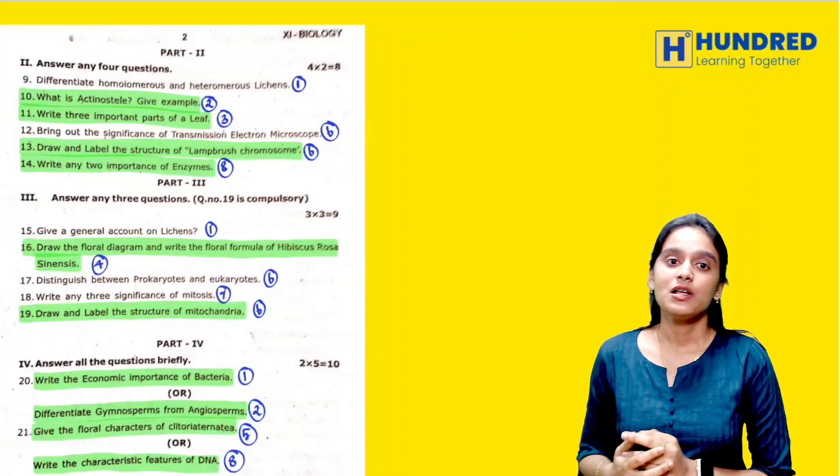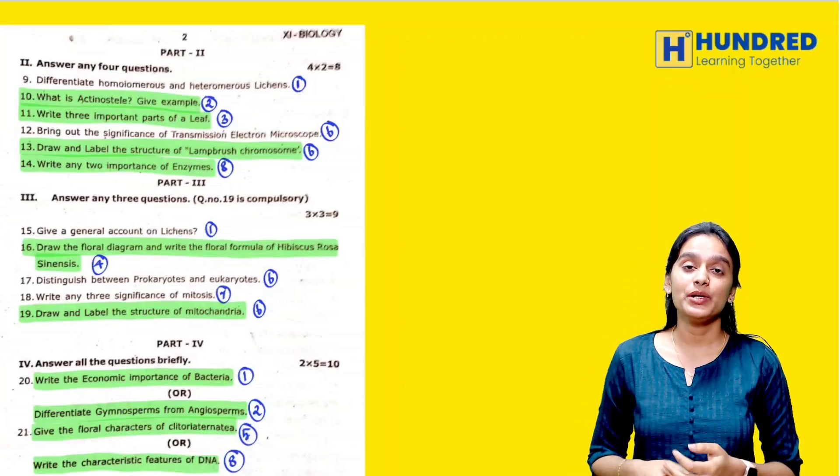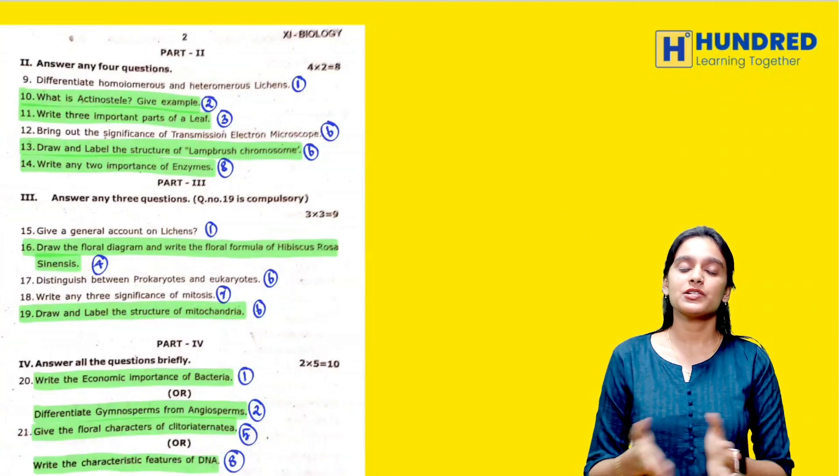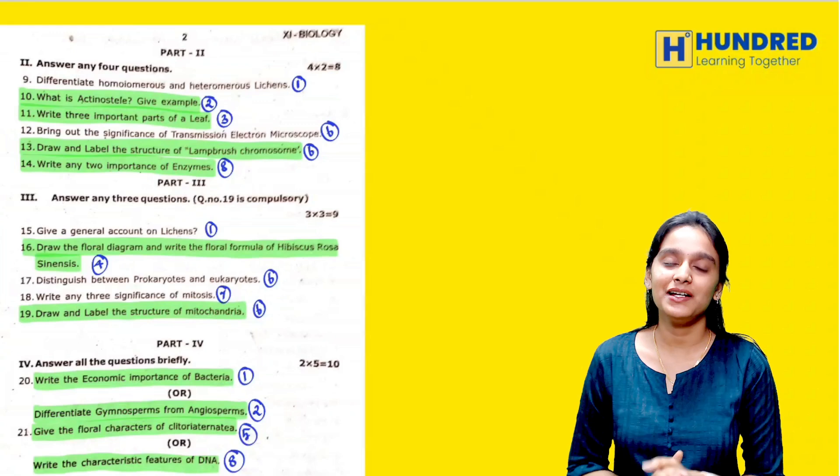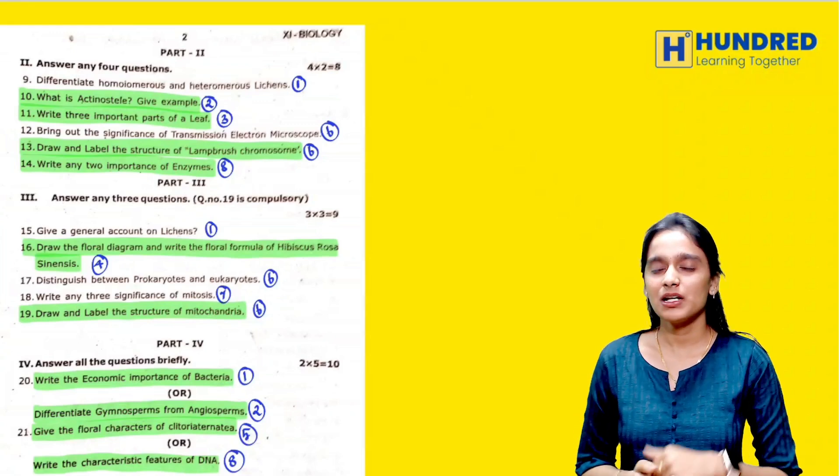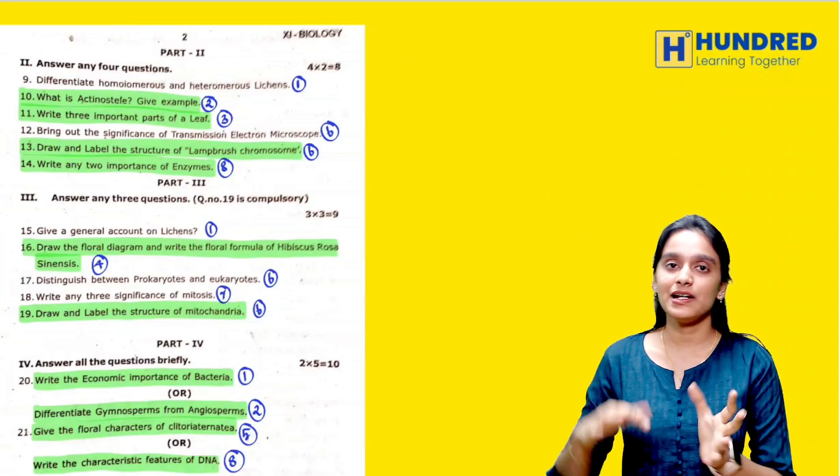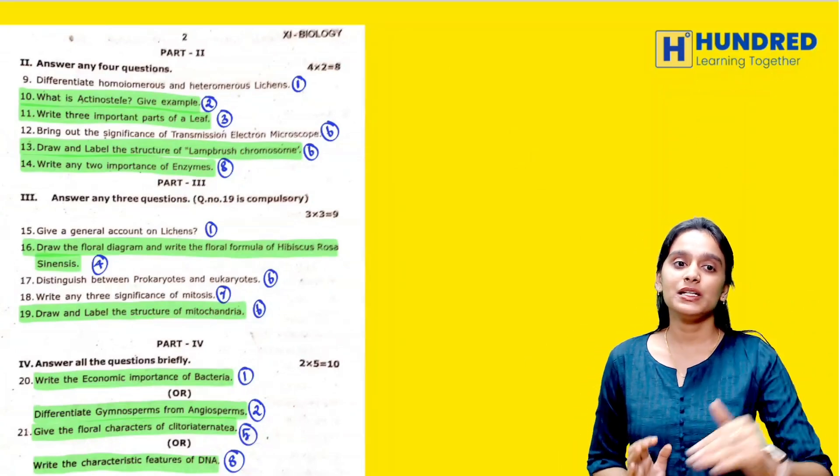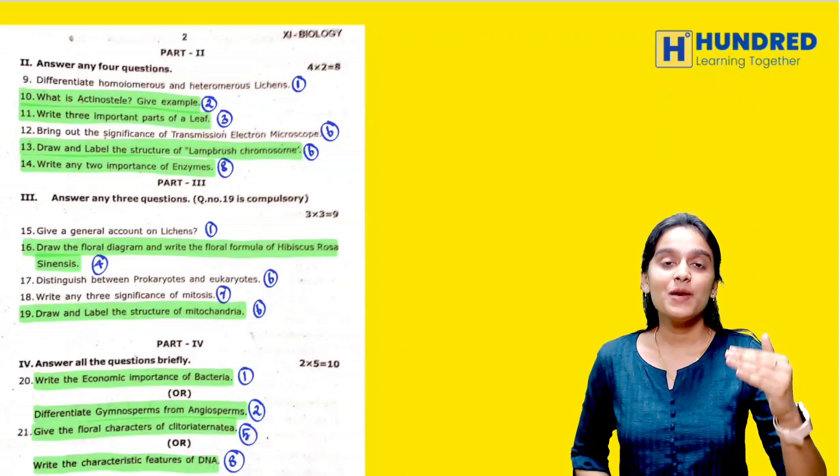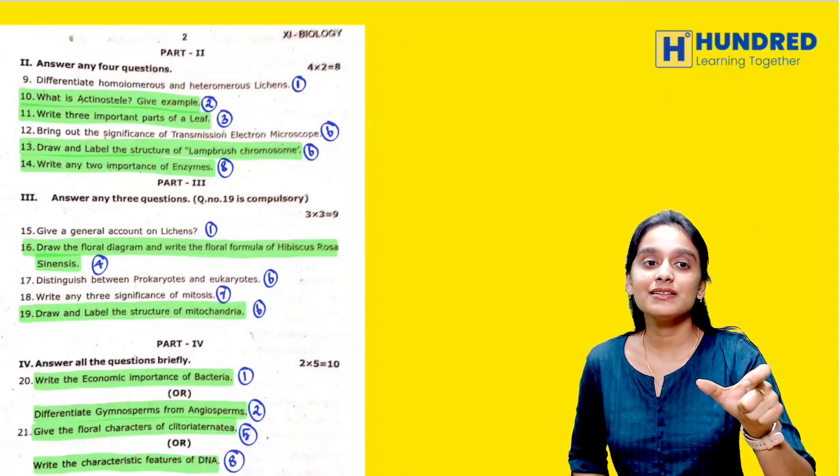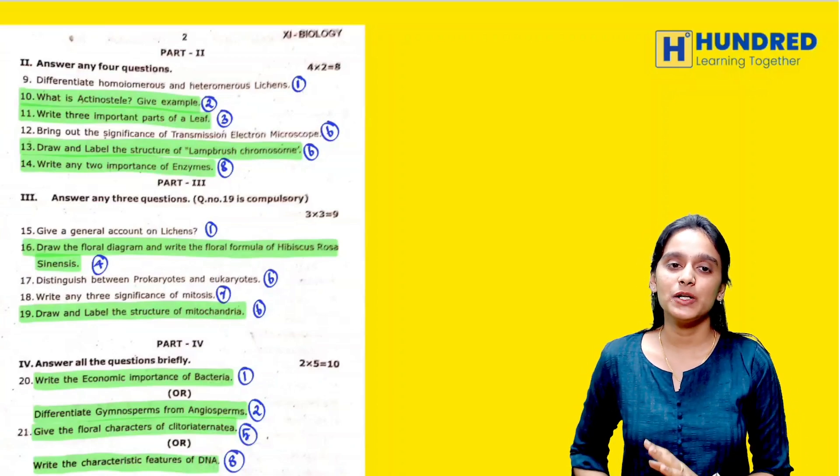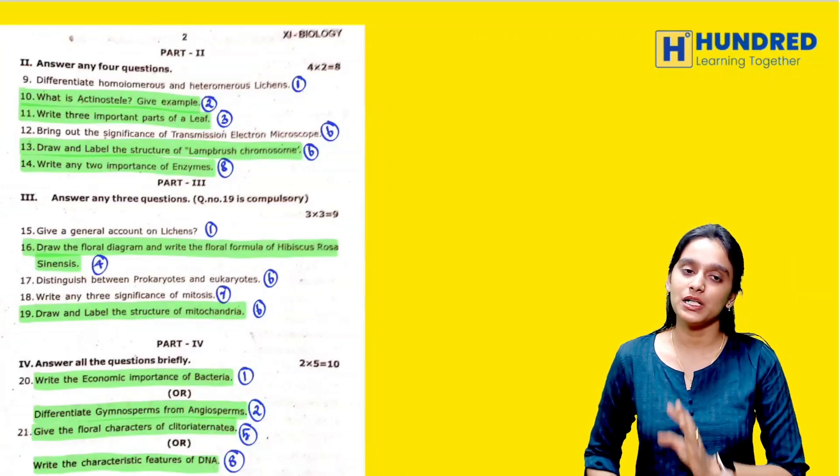16th question is Hibiscus Rosa Sinensis floral diagram and floral formula. This has appeared in 3 years public exam, but quarterly exam comparatively it is very easy. Clitoria, Datura, it is a little easier. We can learn from book back. So if you study 3 marks, you have 3 questions to attend including mitochondria structure, which is a compulsory question and very difficult.